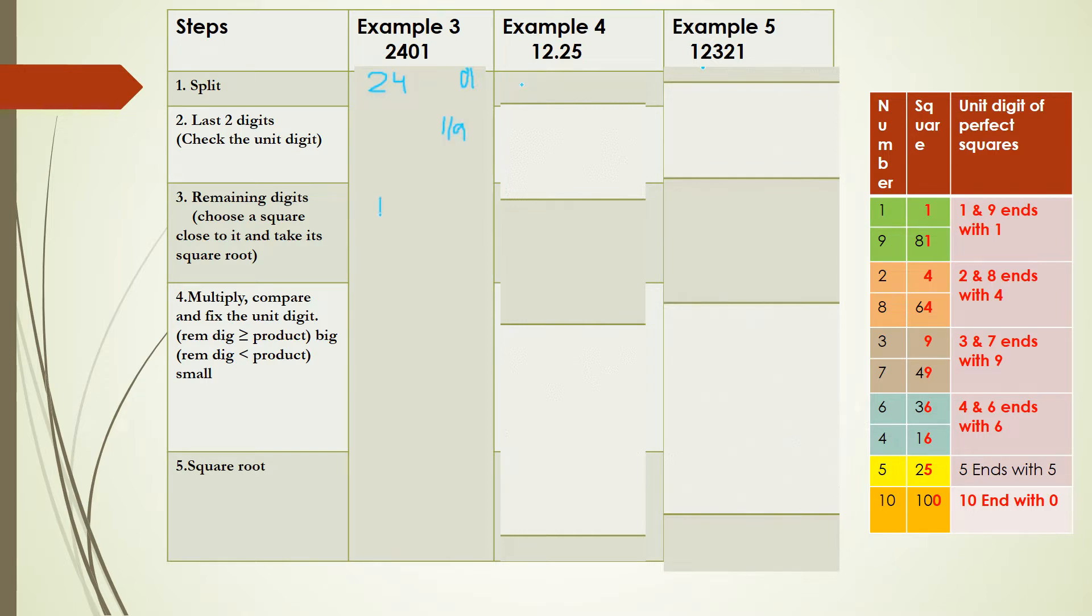Then multiply 4 and 5 (the next succeeding digit). So 4 × 5 = 20. Compare this with the remaining digits: 24. Since 24 is bigger, the unit digit of our square root is 9. Hence, the square root of 2401 is 49.